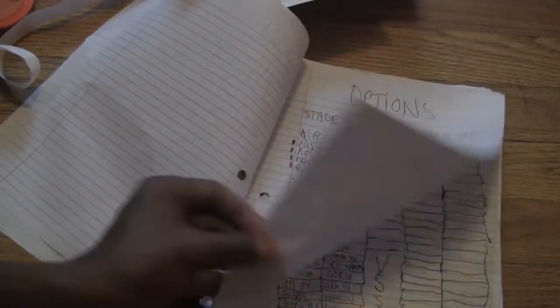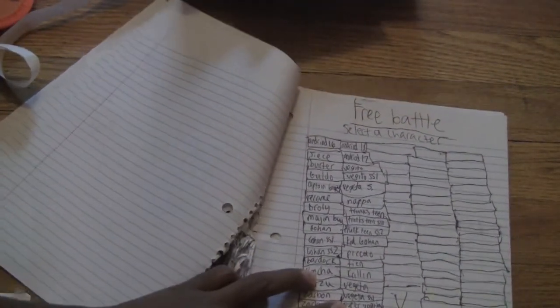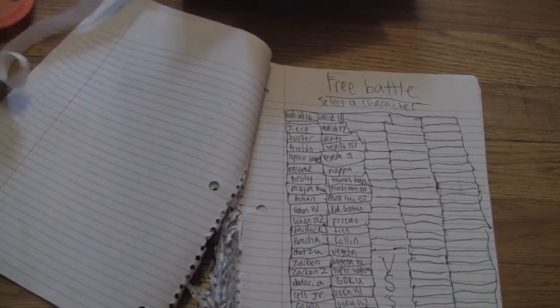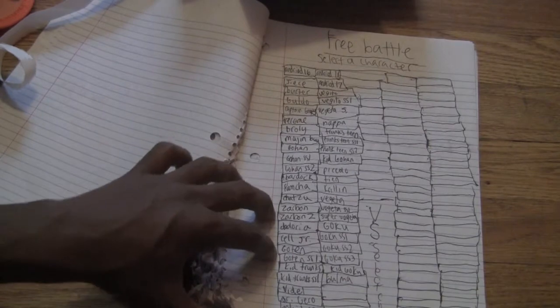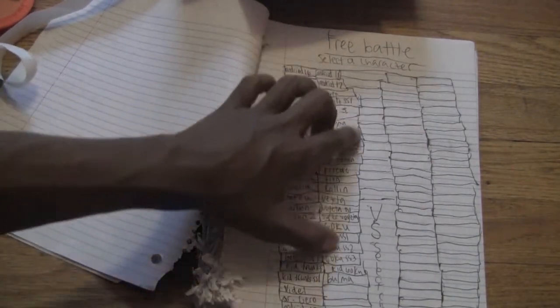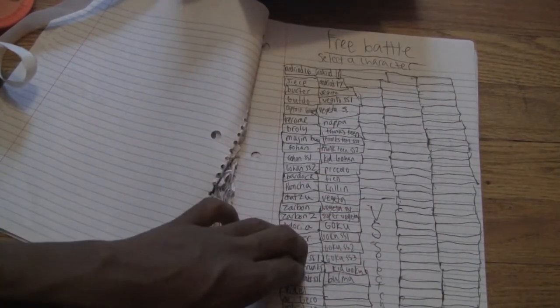So now we're back to the free battle. Alright, so as you can see, these are all the characters there. Alright, as you can see, you start with a bunch of characters this time.